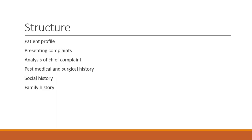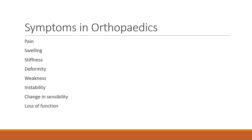The general structure of history taking in orthopedics is the same as any history: you start with the patient profile, the presenting and chief complaint, analysis of that chief complaint, past medical and surgical history, social history, and family history. The symptoms specific to orthopedic patients are pain, swelling, stiffness, deformity, weakness, instability, change in sensibility, and loss of function.